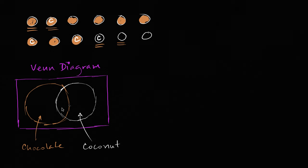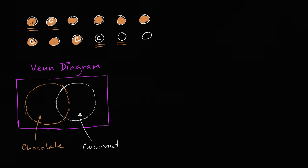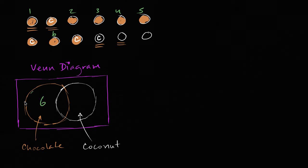Now we can fill in the different sections. How many of these things have chocolate but no coconut? Let's see: one, two, three, four, five, six have chocolate but no coconut. So this section right over here is six.